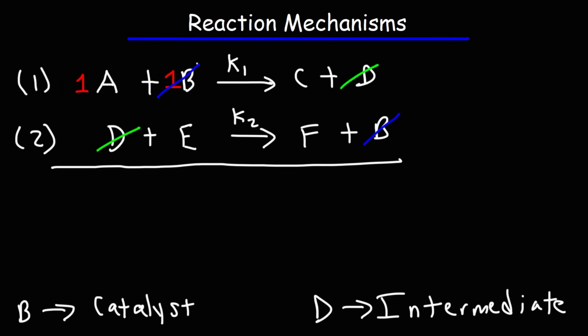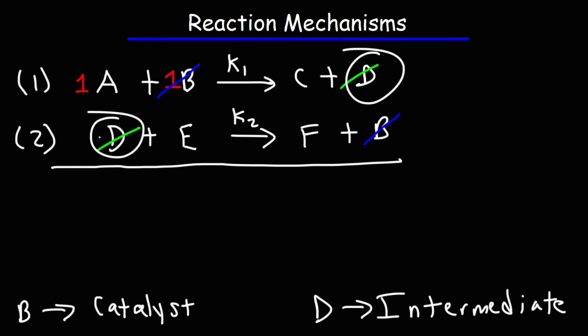The catalyst is at the beginning and at the end of the reaction — it is consumed first and produced later. The intermediate is in the middle; it is produced first and then consumed later. A catalyst is a substance that speeds up a chemical reaction by providing an alternative pathway for reactants to become products, and it lowers the activation energy.